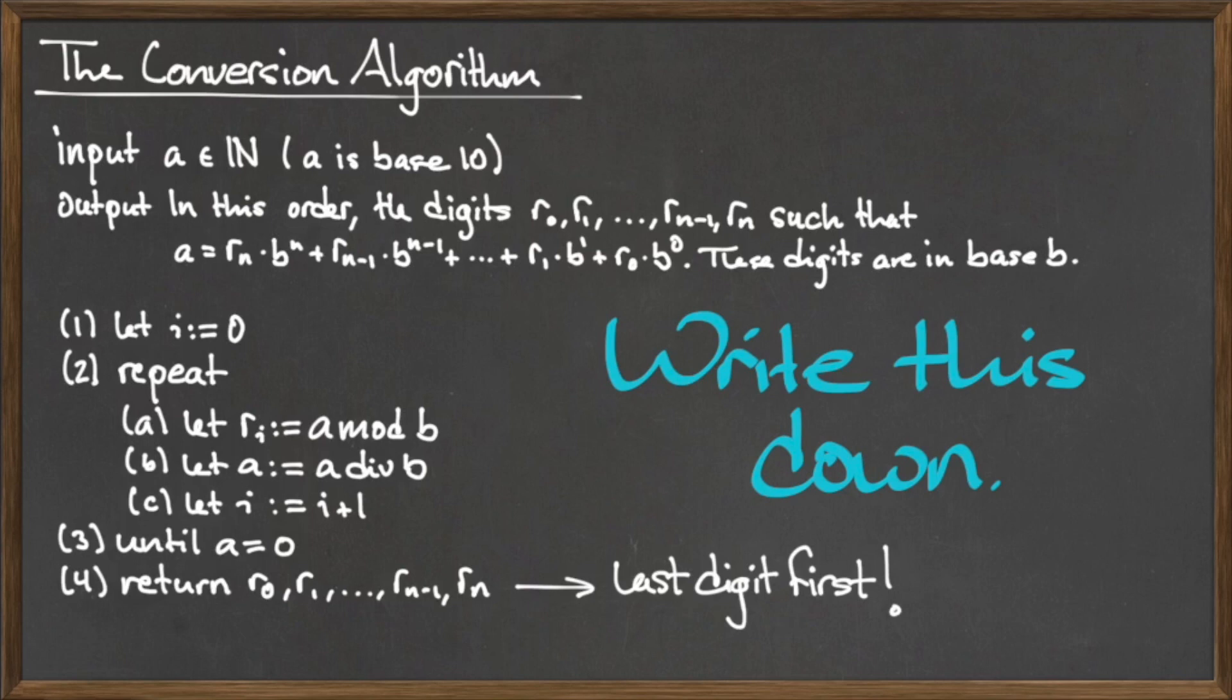We continue to do this until the stopping condition a equal to 0 is satisfied, at which point we return the digits r sub 0, r sub 1, through r sub n in reverse order to form the base B representation of the base 10 number.